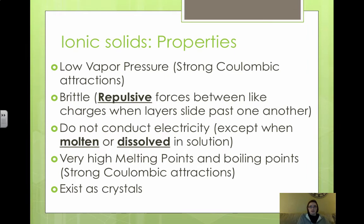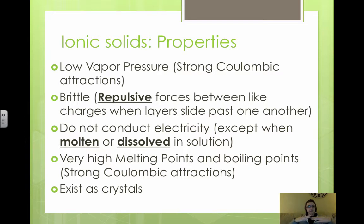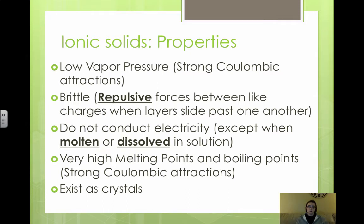In terms of properties of ionic solids, they have pretty low vapor pressure because the ionic bonds are very strong, making it much harder to overcome the ionic bond in order to exert a vapor pressure. Ionic solids also tend to be brittle — meaning they break when you try to bend them — because if a stress is applied, the layers of the ionic solid shift, causing cations to end up next to cations and anions next to anions. This alignment of like charges creates repulsive forces that push the layers apart and cause the ionic solid to break.